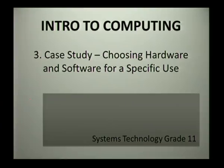Welcome to our lesson for today. We are going to look at the different types of hardware and software that you can choose from whenever you have to buy a computer. In this topic we are focusing on systems technology, still looking at the introduction of computers. Choosing specific hardware and software depends on the use of a computer — if you know what you're going to use your computer for, it makes it easier to choose.